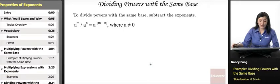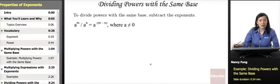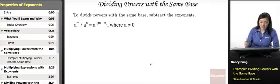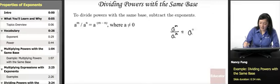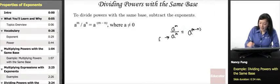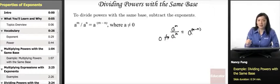Let's try dividing powers with the same base. When multiplying, you add the exponents; when dividing, you subtract the exponents. So a to the m over a to the n equals a to the m minus n, where a is not 0 — because you cannot divide by 0, which would be undefined.